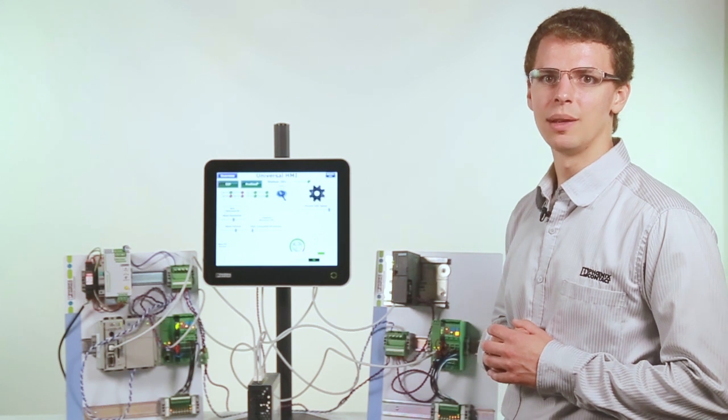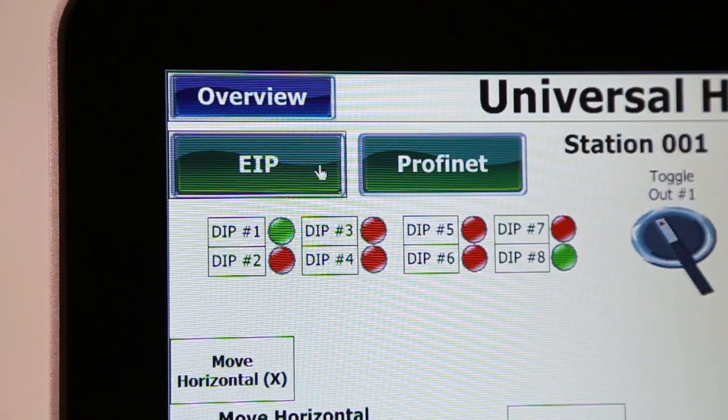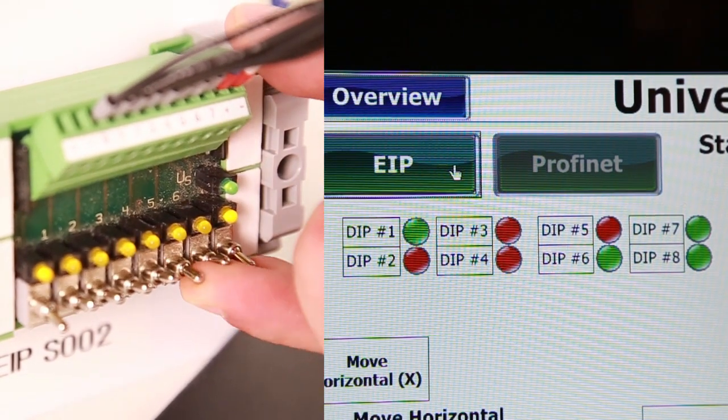Now using the same screen, I'll change the focus from Profinet to Ethernet IP communication and we'll notice the same objects are now being populated with data from the Rockwell controller.